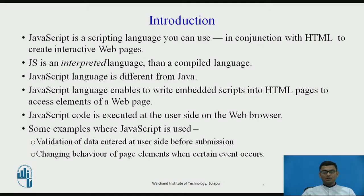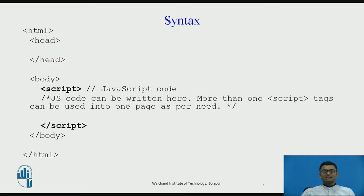JavaScript code is executed at the user side on the web browser. This is very important to understand because you need to understand the compatibility of the web browsers before you create code to be used on a specific web browser. So this was the introduction. For the basic syntax, in your HTML page you just write two tags — script and /script — and everything that you write in these two tags is considered to be JavaScript code.